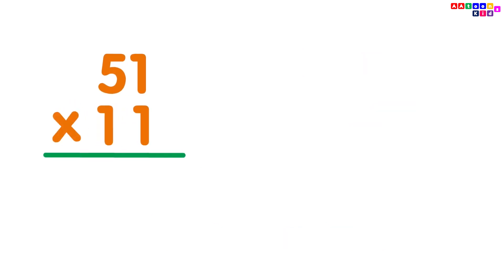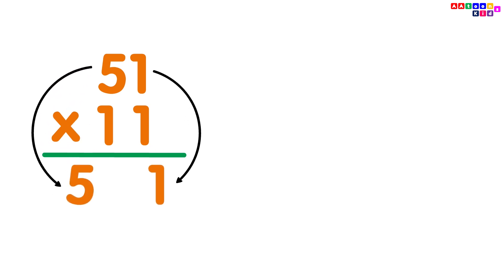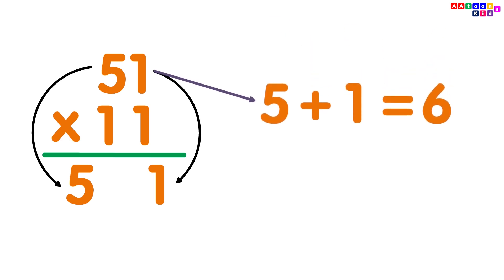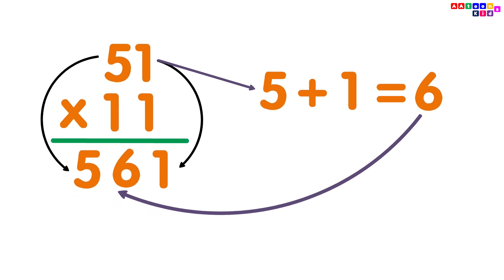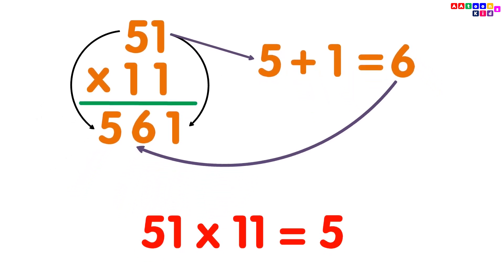51 multiplied by 11. Simply write the digits 5 and 1. Then add the digits: 5 plus 1 equals 6. Put the 6 between digits 5 and 1, and you will get your answer 561. So, 51 multiplied by 11 is equal to 561.